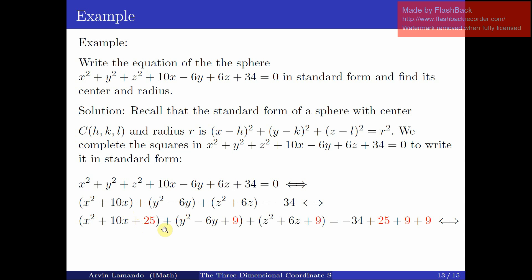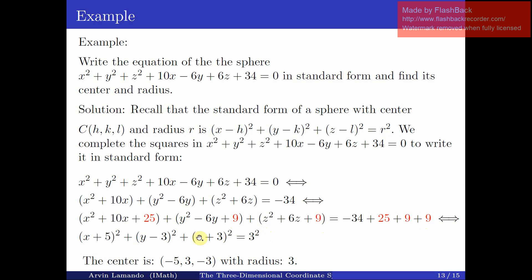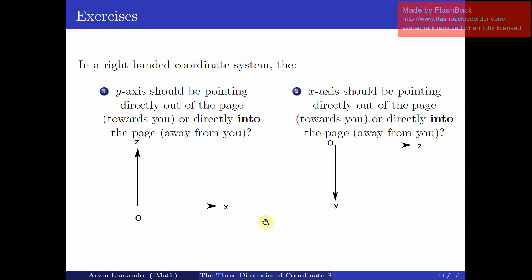We add the necessary constants to complete the squares — here we add 25, 9, and 9 to both sides. The x-terms simplify to (x+5)², the y-terms to (y-3)², and the z-terms to (z+3)². The right-hand side reduces to 9 = 3². Therefore the center of the sphere is (-5, 3, -3) and the radius is 3.